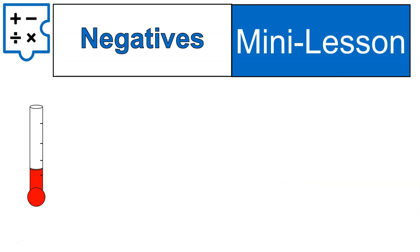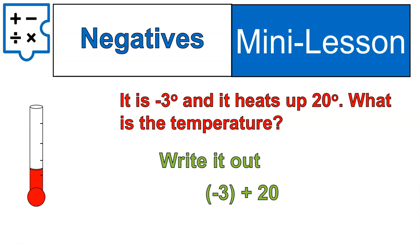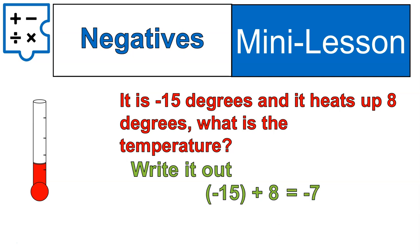Let's do a question with temperature. It's negative 3 degrees and it heats up by 20 degrees — what's our temperature? We're joining together a negative (negative 3) and a positive (positive 20), so we write it as negative 3 plus 20. If you started at negative 3 and the temperature went up 20 degrees, it would rise up to positive 17. Another example: if it's negative 15 degrees and it heats up 8 degrees, starting at negative 15 and adding 8, we're still negative — we're at negative 7 degrees.